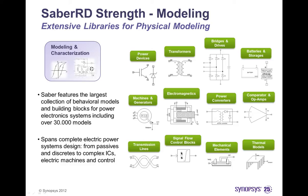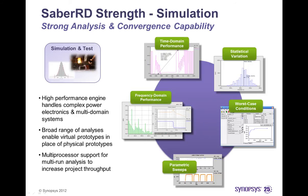Sabre RD provides a broad range of analysis types to serve the needs of developers of power electronics and multi-domain systems. Available simulation analysis types range from steady state, transient, and frequency response to parameter variations and sophisticated methods for analyzing statistical behavior or identifying worst case scenarios. Sabre RD also supports grid computing technologies and multiprocessor support to boost simulation performance and increase project throughput.